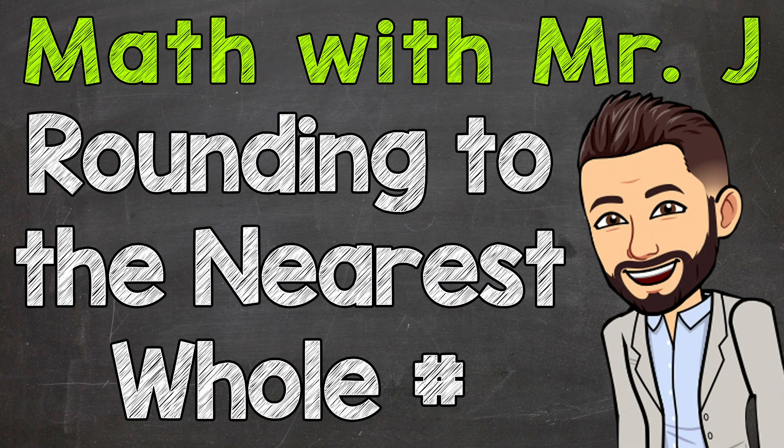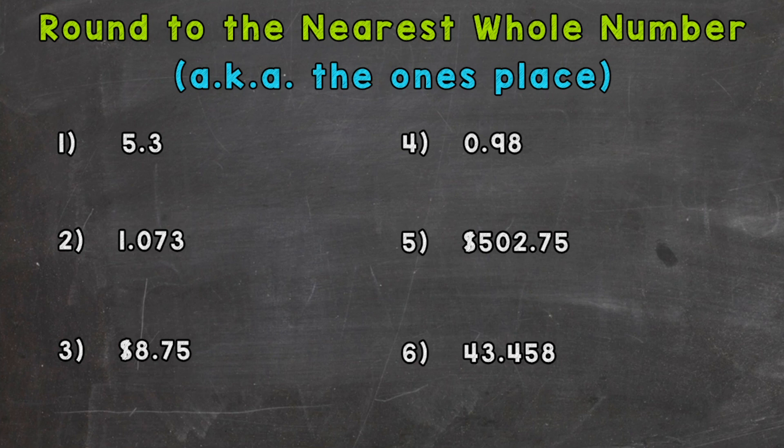Welcome to Math with Mr. J. In this video we're going to talk about rounding to the nearest whole number, also known as the ones place. Rounding to the nearest whole is just rounding to the ones place. We have six numbers that we're going to go through and round to the nearest whole.